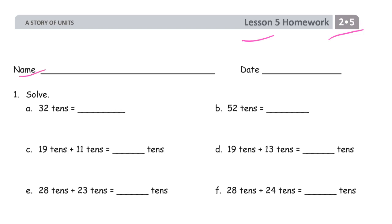We're just converting some unit form for the first couple ones here. 32 tens is 320. So 52 tens is 520.